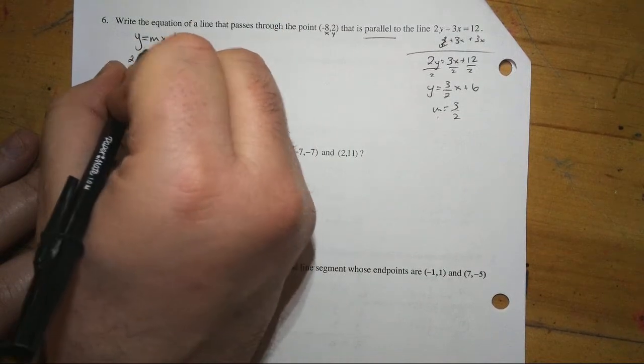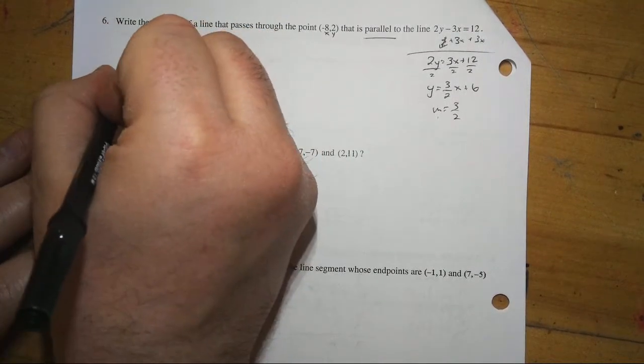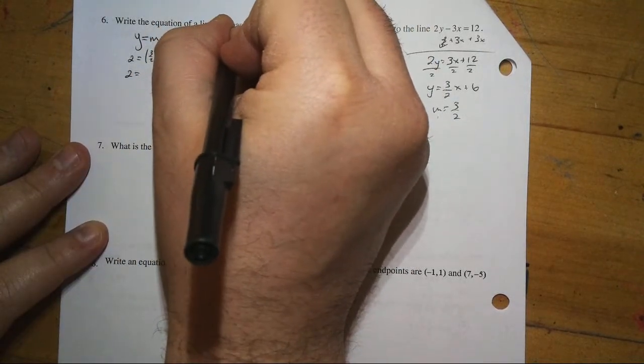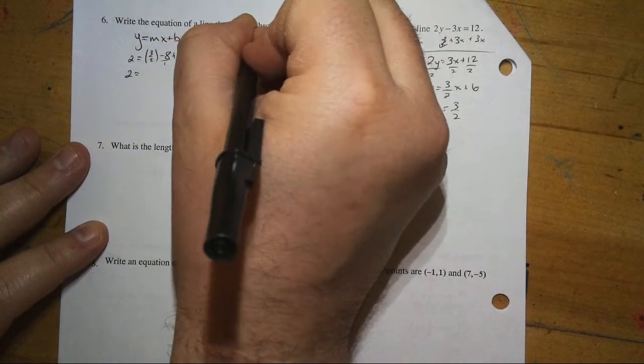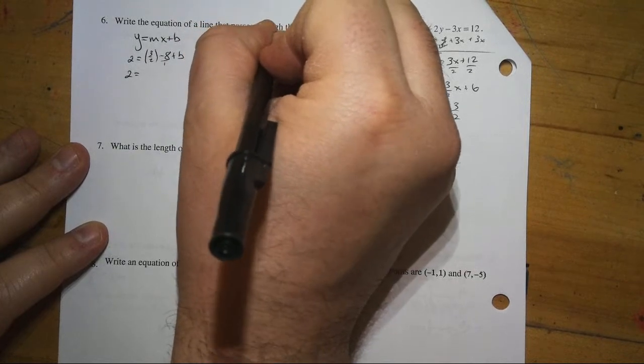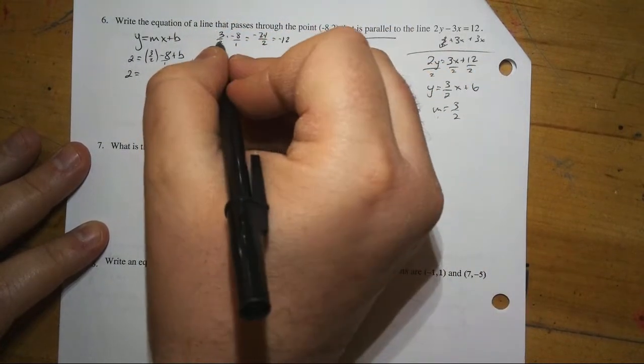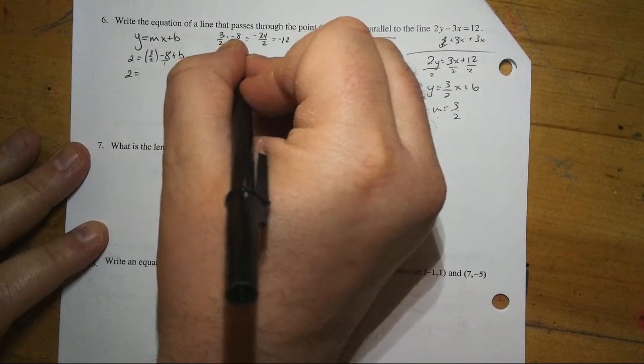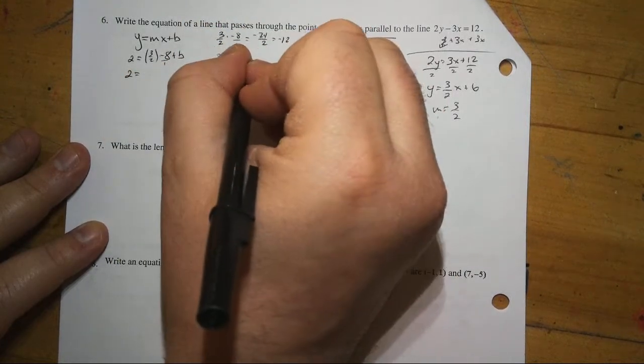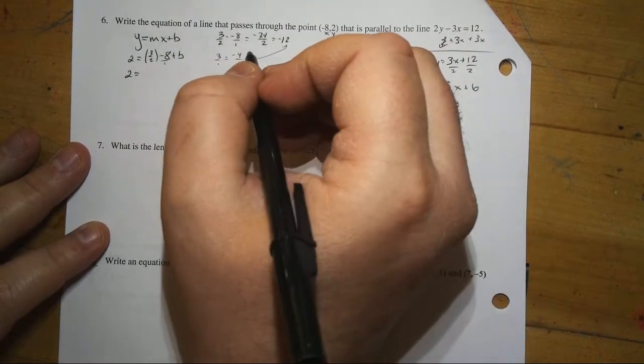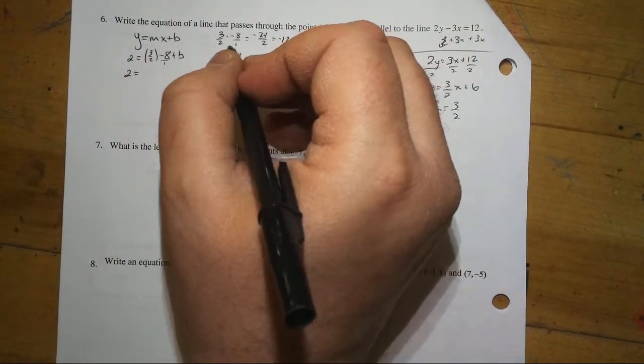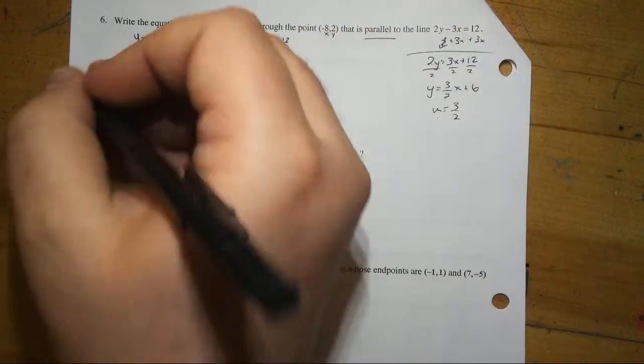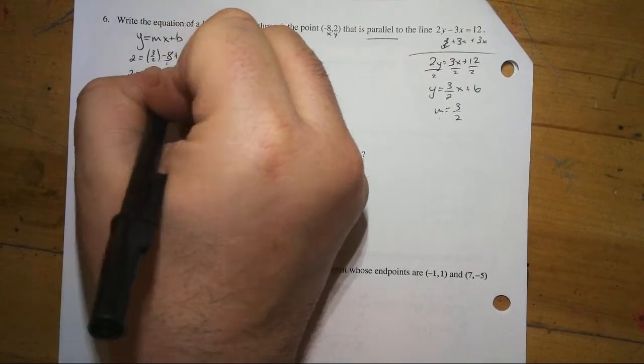Now, technically what this means is you're doing 3 times negative 8 over 2 times 1. So, it's really like 3 over 2 times negative 8 over 1. It's negative 24 over 2, which is just negative 12. The 2 and the 8 can reduce to give you 3 over 1 and negative 4 over 1. You should get negative 12 plus b.